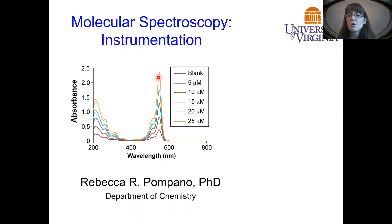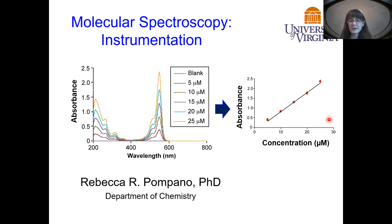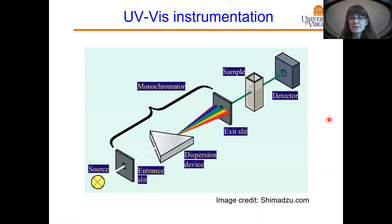If we have a good quantitative absorbance spectrophotometer, we would be able to choose one wavelength and quantify the absorbance as it increases in response to increases in concentration. So in order to get this type of quantitative analytical data, we need a good instrument. Let's look at what the components of that are.